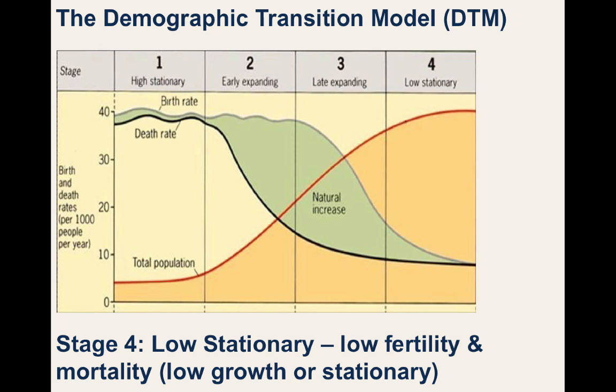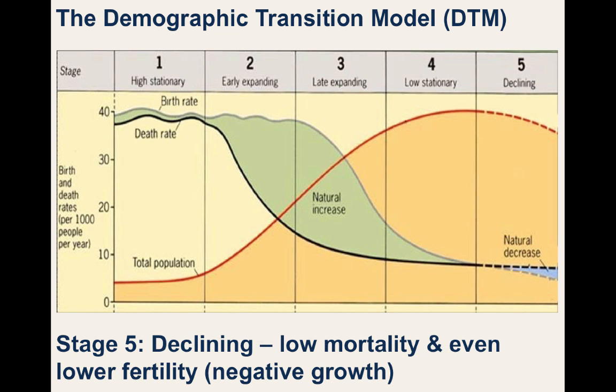Furthermore, some countries have entered into Stage 5 of the DTM, in which birth rates have fallen below death rates, leading to a rate of natural decrease and a declining total population. Countries like Japan and Italy have very low birth rates, and other countries like Albania and Cuba not only have low birth rates but also greater numbers of emigrants leaving their territories.